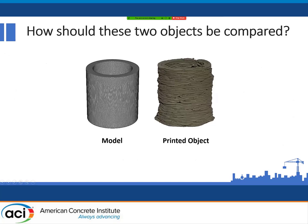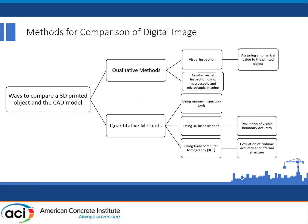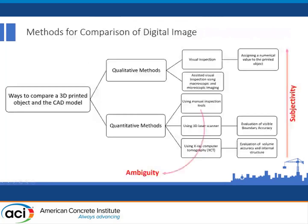Our question for today's talk is: how should we compare these two objects? The one on the left is the model or target object, and the one on the right is a printed object. There are lots of ways to do this if you search the literature, and they fall into two categories: qualitative methods and quantitative methods. Qualitative methods are basically visual inspection methods or methods that augment visual inspection with some sort of microscopy. Quantitative methods typically use measurements, laser scanners, or even X-ray CT. The problem is that most of these methods have some level of subjectivity, and the way they're reported in the literature is kind of ambiguous.